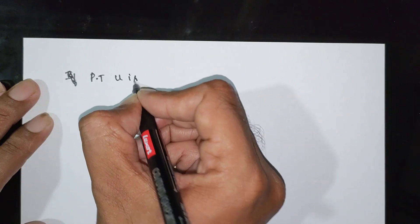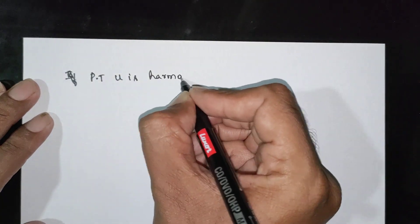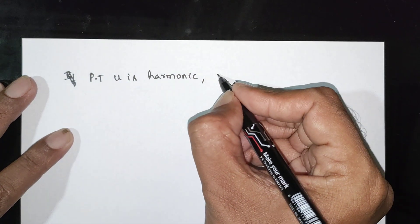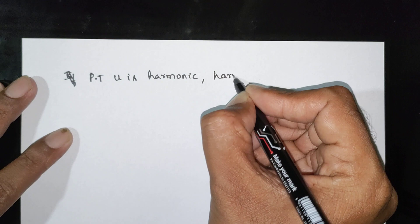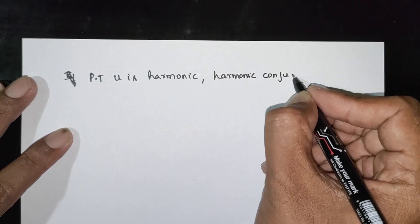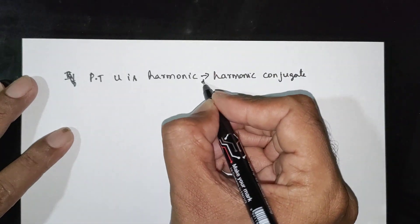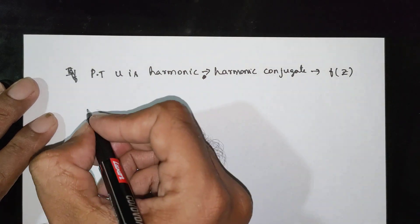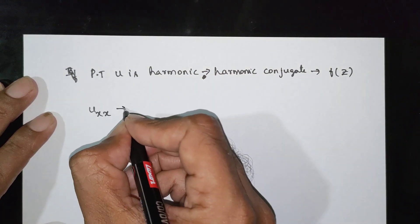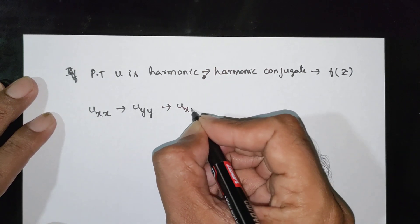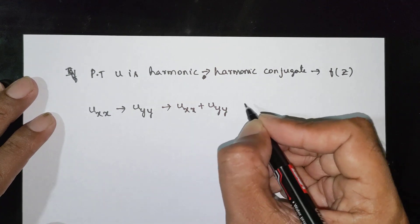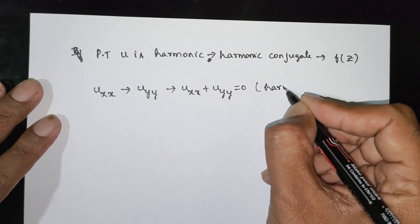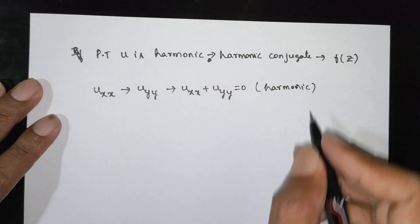We also need to prove that U is harmonic, find its harmonic conjugate V, and verify the analytic function. To prove U is harmonic, find uxx and uyy and show that uxx plus uyy equals zero. Then the harmonic conjugate V is found using the same CR equation integration procedure.